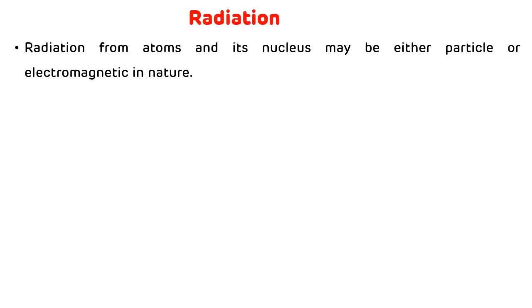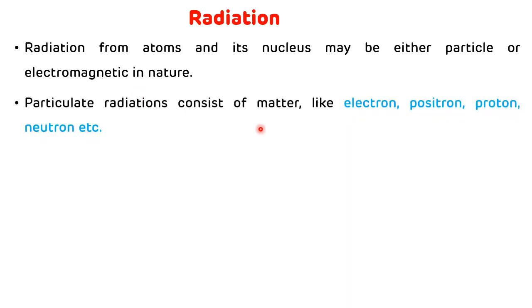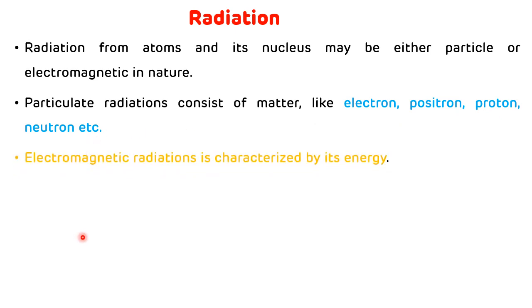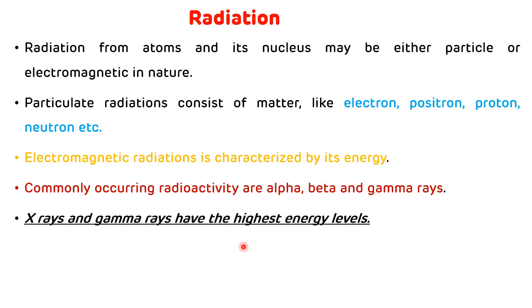Radiation from atoms and their nucleus may be either particulate or electromagnetic in nature. Particulate radiation consists of matter like electrons, positrons, protons and neutrons. Electromagnetic radiation is characterized by its energy. Commonly occurring radioactivity includes alpha, beta and gamma rays, and X-rays and gamma rays have the highest energy levels.